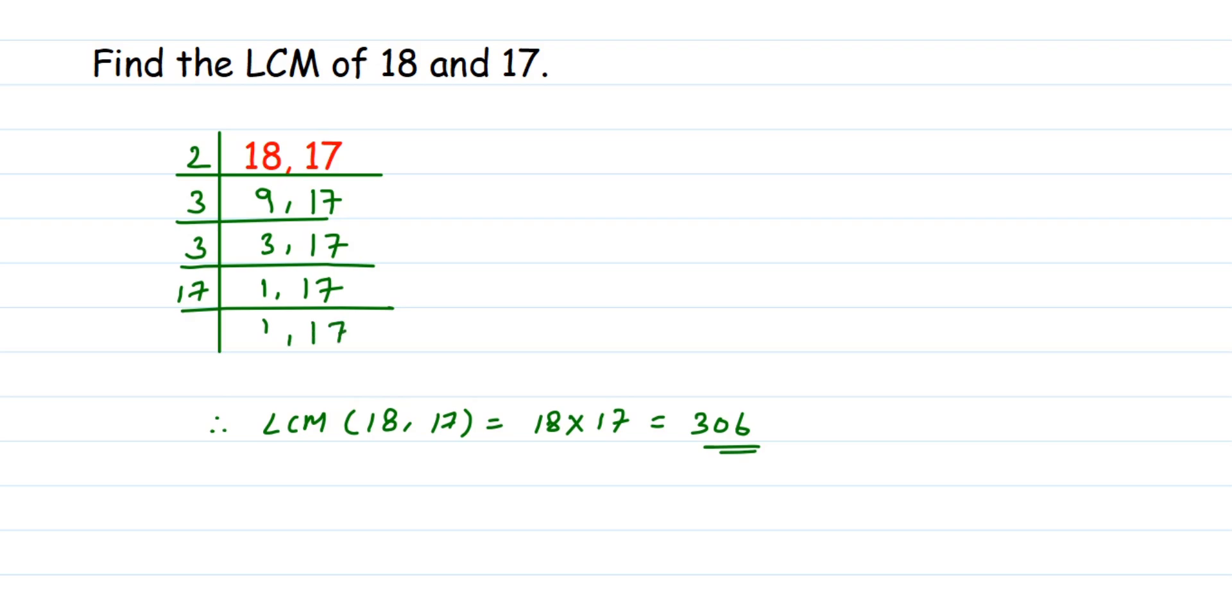Now if you observe here, we got 17, right? And if you multiply this number, two threes are six, six threes are 18, and this is this number. So what we're doing here, we're multiplying 18 and 17.